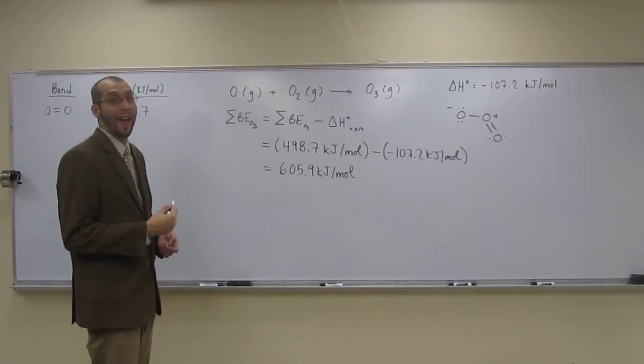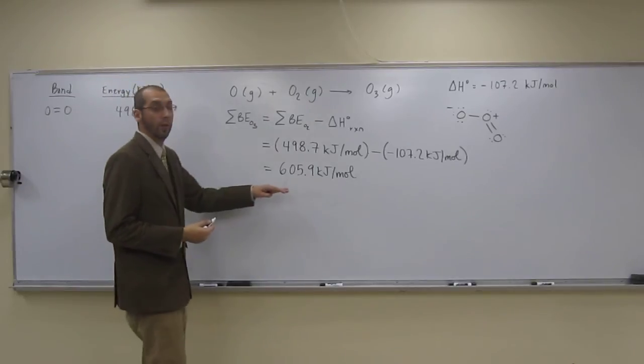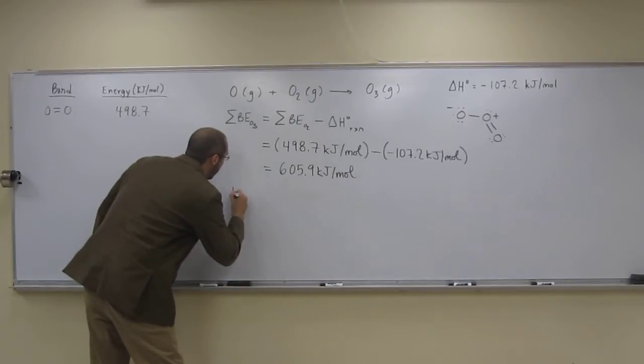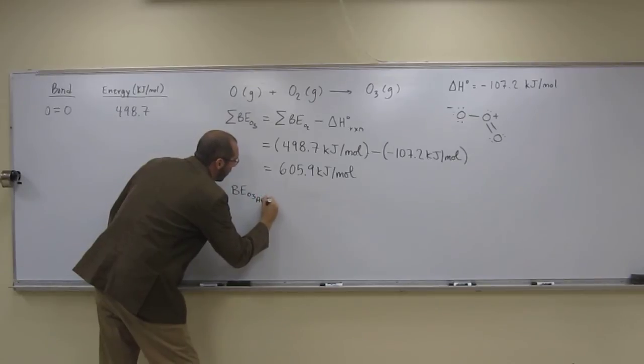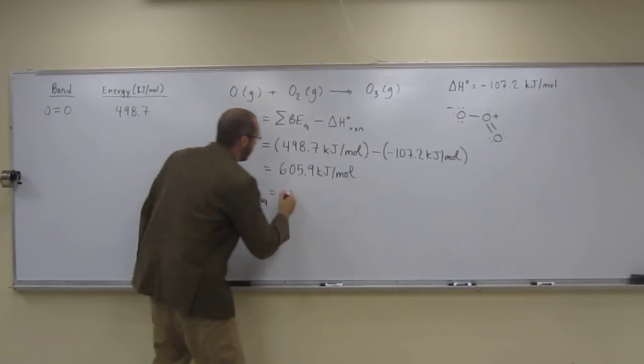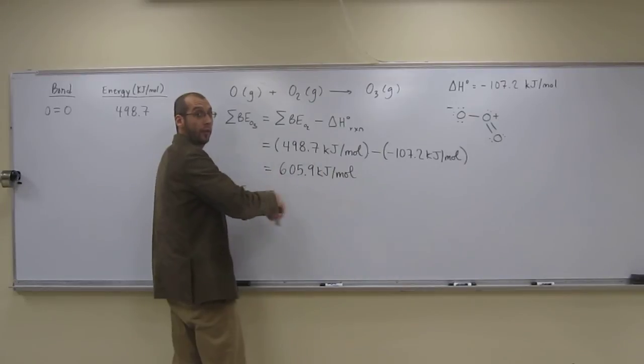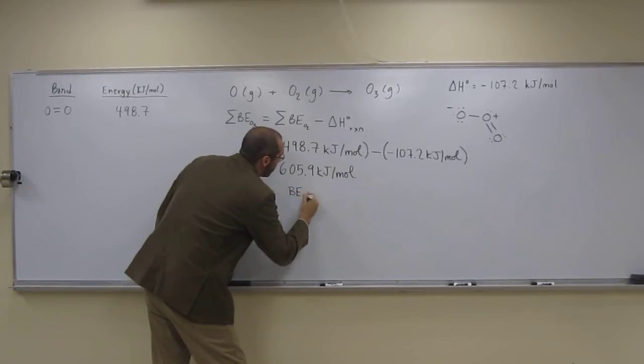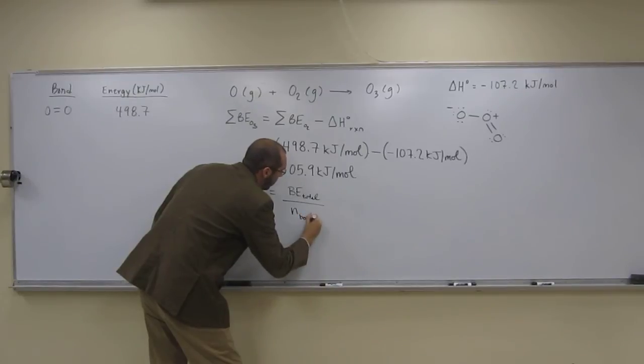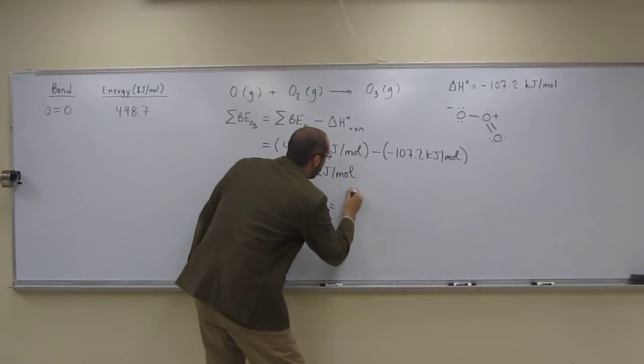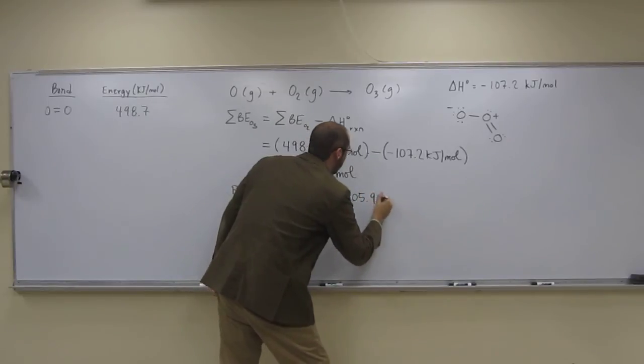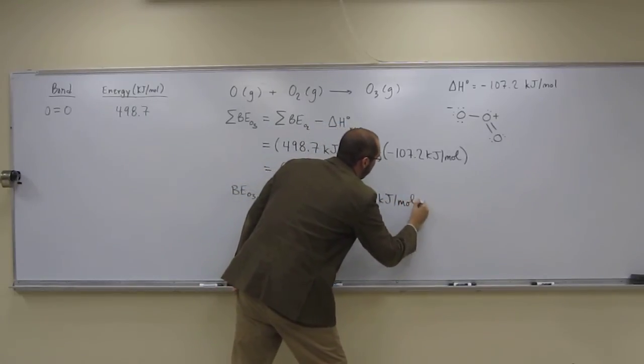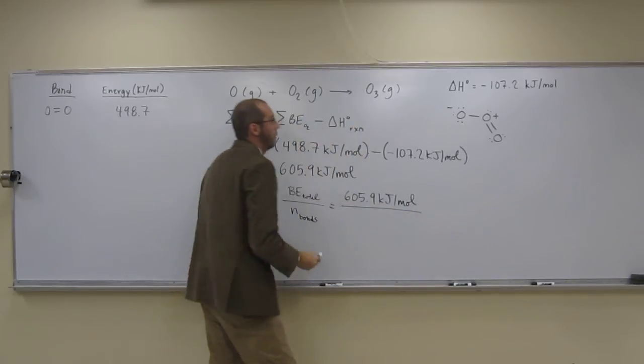So how do we figure out what the average bond energy is? Well, there's two of them, right? So the average bond energy is going to be the total bond energy divided by the number of bonds.